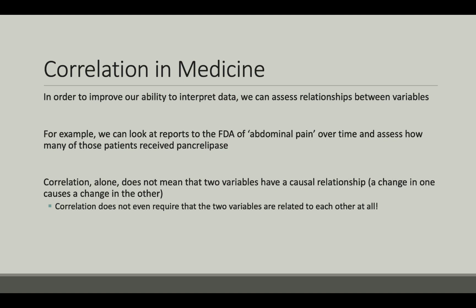In order to improve our ability to interpret data, we can assess relationships between variables. For example, we can look at reports to the FDA of abdominal pain over time and assess how many of those patients receive pancreolipase. Correlation alone does not mean that these two variables have a causal relationship — a change in one causes a change in the other. Correlation does not even require that the two variables are related to each other at all.